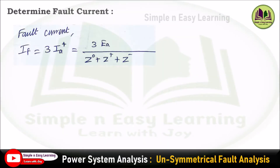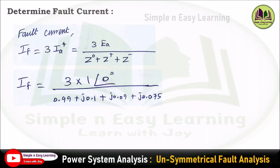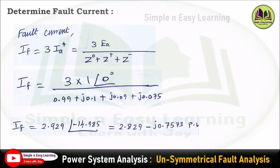Now determine the fault current. For a single line to ground fault: IF = 3×IA+ = 3×EA / (Z0 + Z+ + Z−). The induced EMF EA is not specified in the problem, so per unit value is taken as 1∠0°. Substituting Z0, Z+, and Z− values determined previously, IF = 2.929∠−14.985° or equivalently 2.829 − J0.7573 per unit.